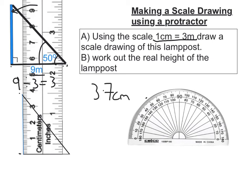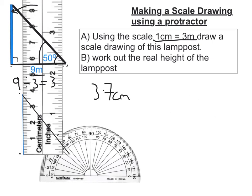So 3.7 centimeters. Using the scale we had before to work out the real height, you multiply your measurement by that. The real height of the lamppost equals 3.7 times 3, which is 11.1 meters tall.